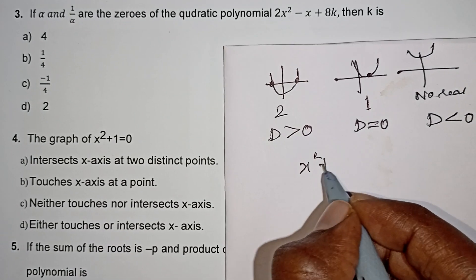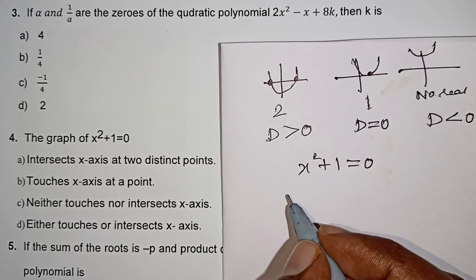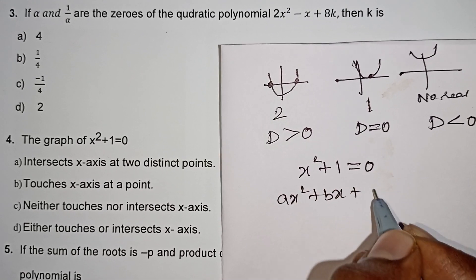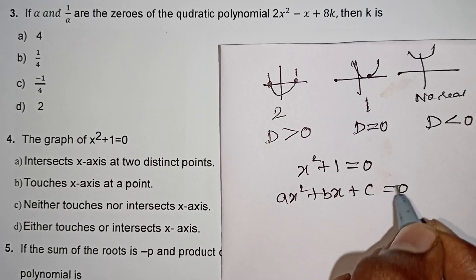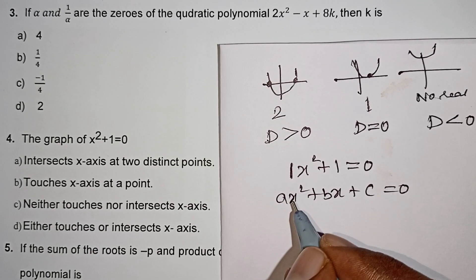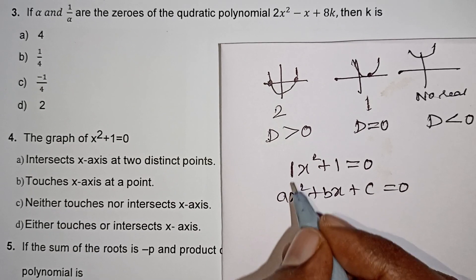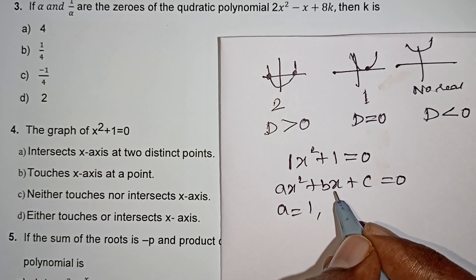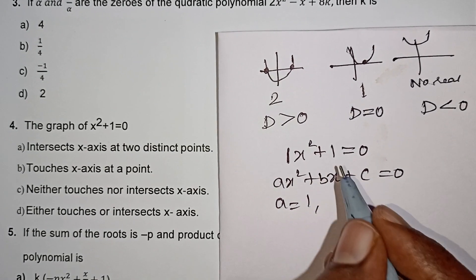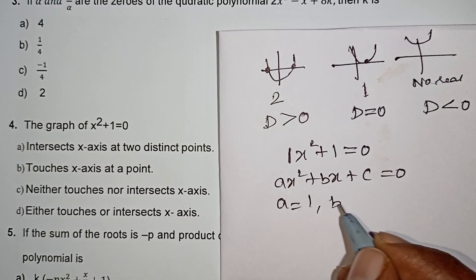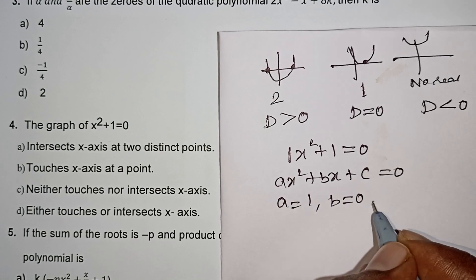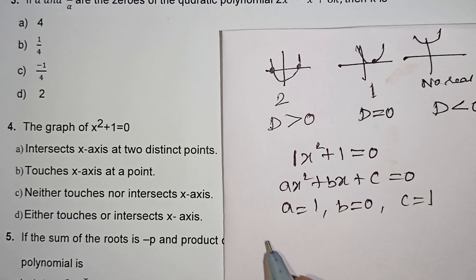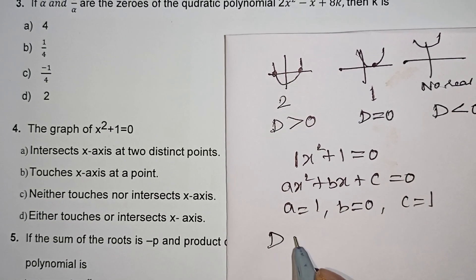Question: x² plus 1 equals zero. Equate to the general form ax² plus bx plus c. A is equal to 1. B is equal to 0. C is equal to 1. The discriminant formula is b² minus 4ac.